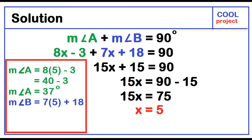The measure of angle B is equal to 7 times 5 plus 18, which is equal to 35 plus 18. The measure of angle B is equal to 53 degrees.